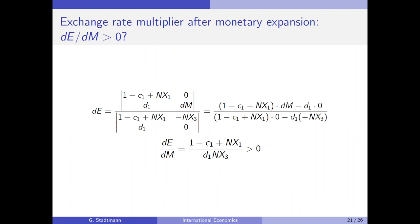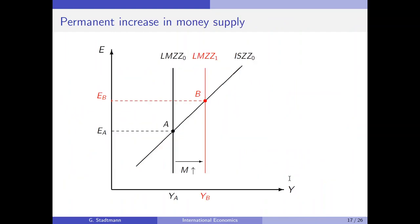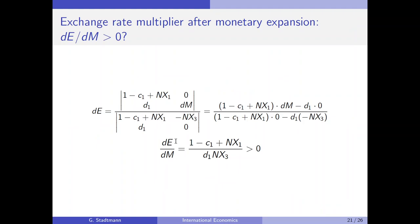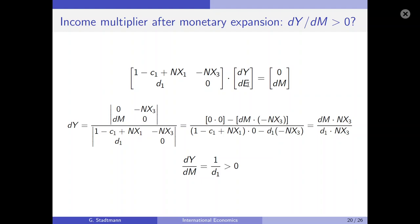Let's have a look at the exchange rate multiplier after a monetary expansion. This relationship should also be positive, because from the graph we know that when the central bank increases money supply, the exchange rate increases from A to B. The exchange rate is located in the second position of the vector of unknowns, so Cramer's rule tells us to insert the solution vector elements into the second column of the coefficient matrix.